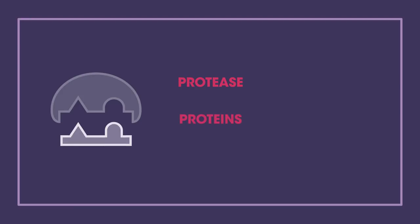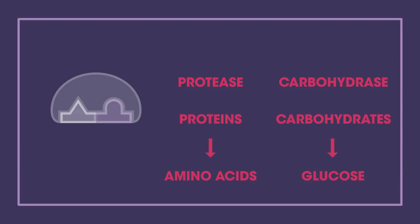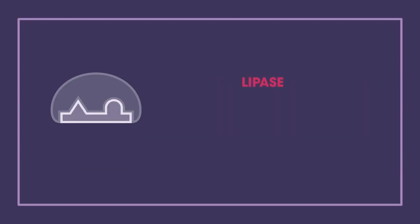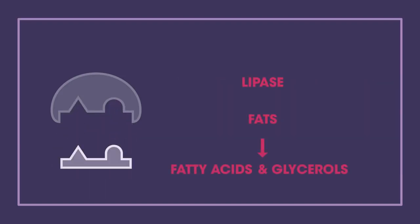In this example, the enzyme is breaking down the substrate into two smaller products. It could be protease, which breaks down proteins into amino acids, or carbohydrase, which breaks down carbohydrates into glucose, or lipase, which breaks down fats into fatty acids and glycerols.